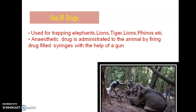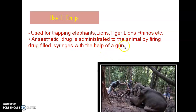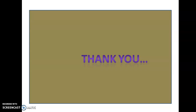Then comes the use of drugs. For very large organisms such as elephants, lions, tigers, and rhinos, these animals are generally collected or trapped by administering a drug into the animal by firing drug-filled syringes with the help of a gun. For example, it is clear that elephants are generally trapped by means of administering drugs via a gun. These are the common methods of collecting various types of mammals.